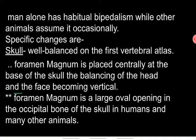First, let's start with what changes came in the skull. To understand this change, you will need to understand the foramen magnum. The foramen magnum is a large oval opening in the occipital bone, present in the dorsal position, through which the brain and spinal cord are connected.